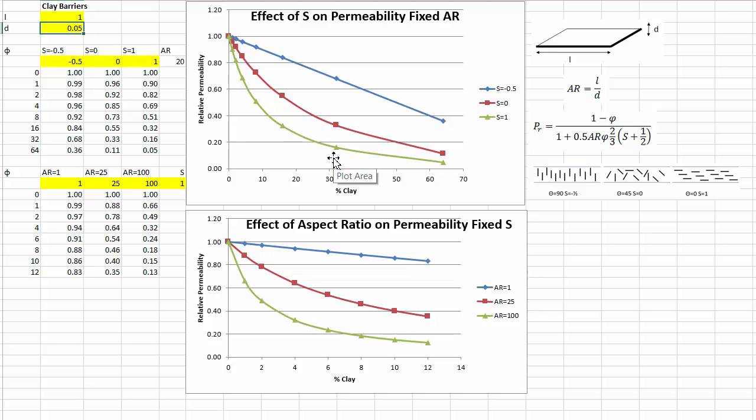So you really need this very high aspect ratio of clay, say an aspect ratio of 100. And now when you add 30 percent clay you're down to very low levels.